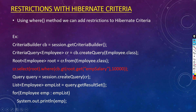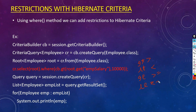Using the gt method (greater than), we also have other relational operator methods: lt for less than, ge for greater than or equal to, le for less than or equal to, eq for equal to, and ne for not equal. These are the relational operators we can use in Criteria API.